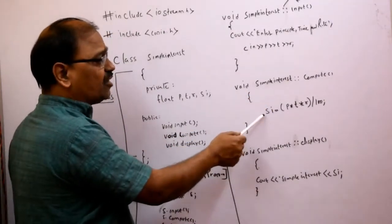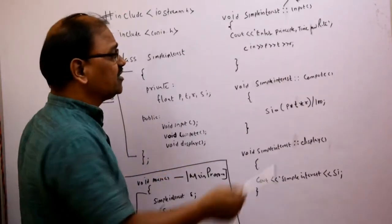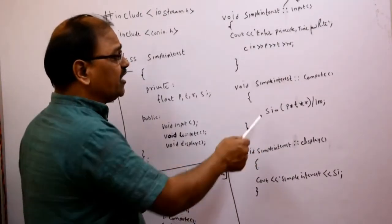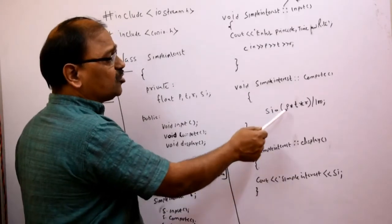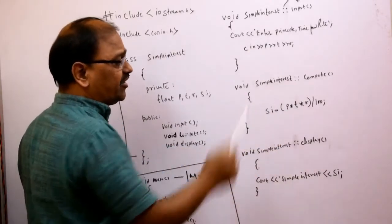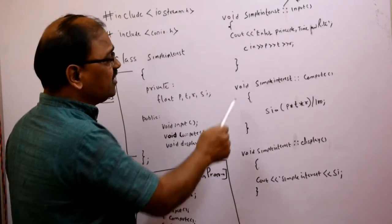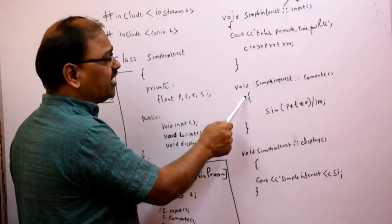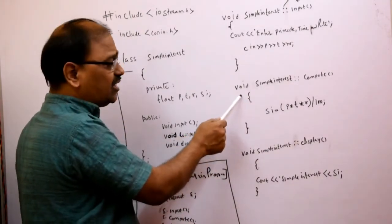We are calculating the formula for simple interest: SI = P * T * R / 100. We have opened the curly brace for the compute member function and closed it. That completes the compute member function.